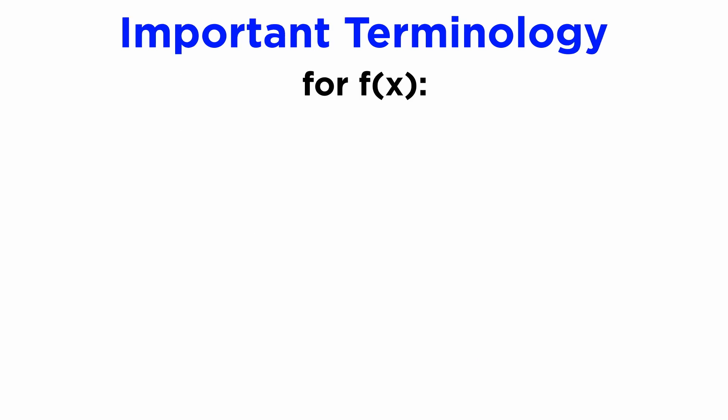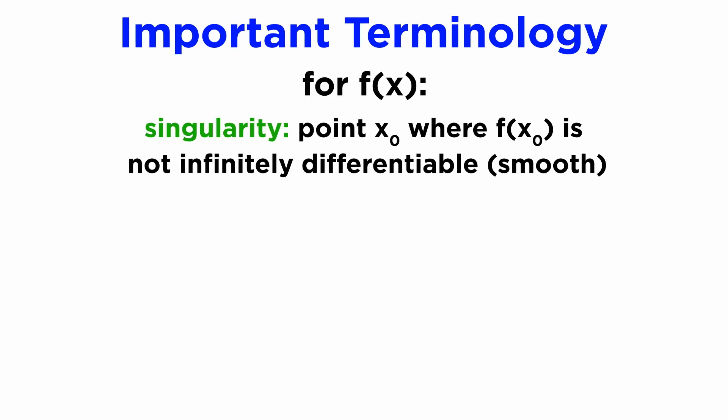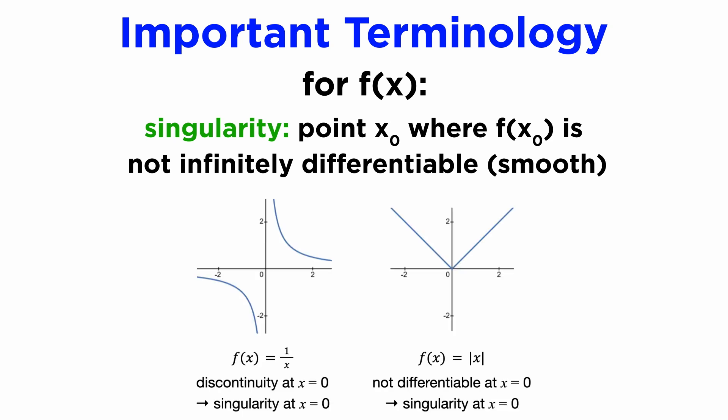We first need a little terminology. For a general function f(x), we say that the point x = x₀ is a singularity of the function f if it is not infinitely differentiable at x₀, which means that f is either discontinuous at x₀, not differentiable at x₀, or both. For example, the functions 1/x and the absolute value of x both have singularities at x = 0.